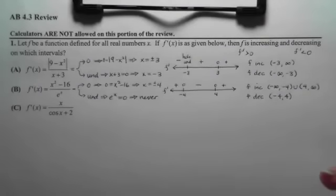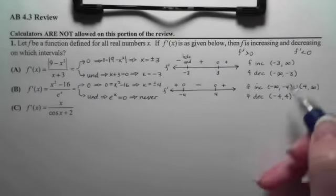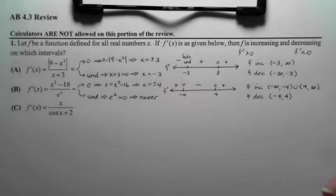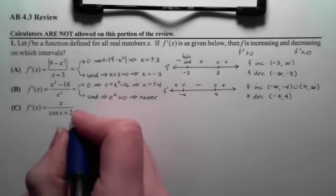Same thing on the decreasing. We can say that f decreases from negative 4 to 4 or we could have done that with hard brackets. I think on the test this time, I've got soft brackets everywhere. So we'll just stick with soft brackets. Okay, last part, c.